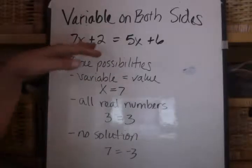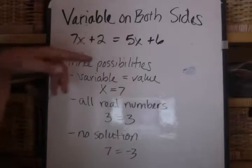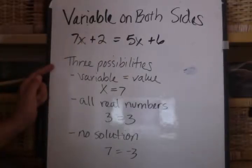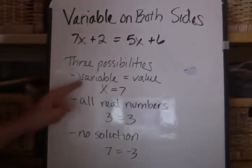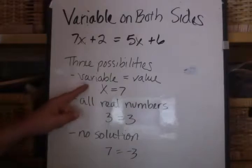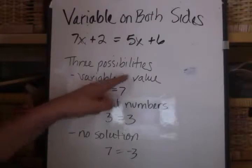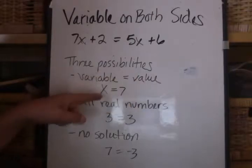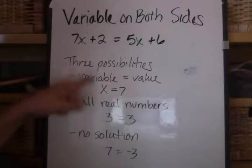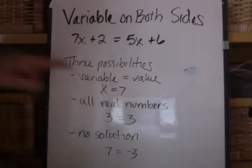So one thing to understand when you have variables on both sides, there's three possible solutions. The first is you actually get a value for x that makes this equation true. So you have the variable ending up with a variable equals some value. And this is what we've been used to, where you have at the end of solving the equation, you have x equals 7 or x equals some number. So that's one possibility.